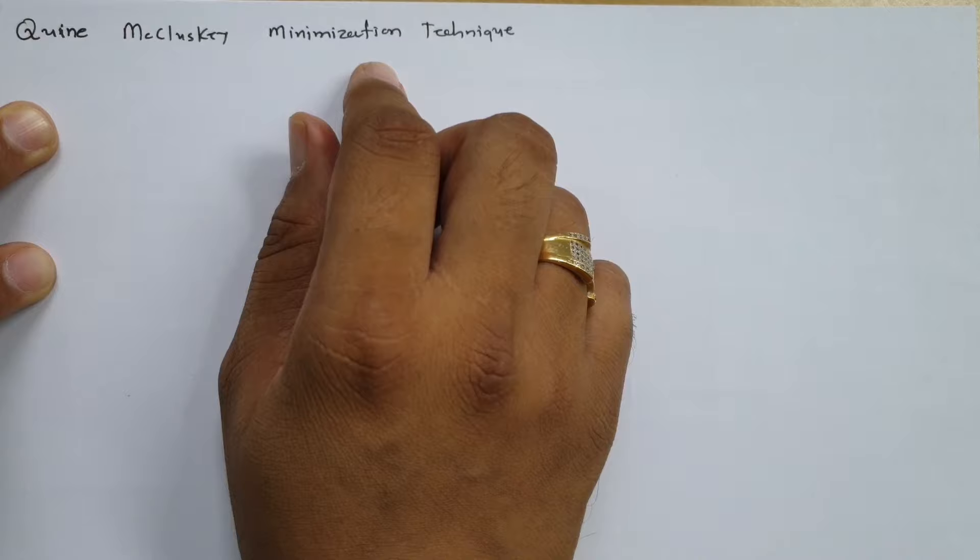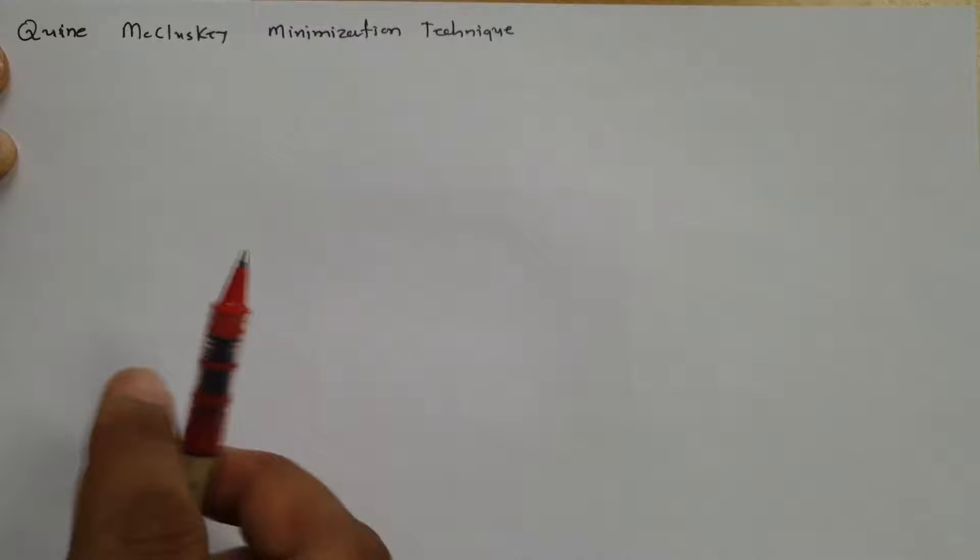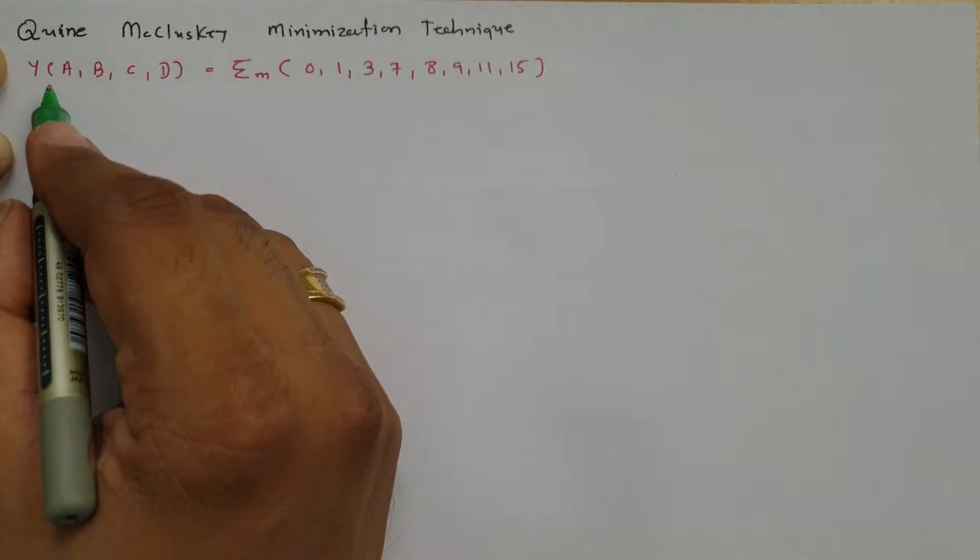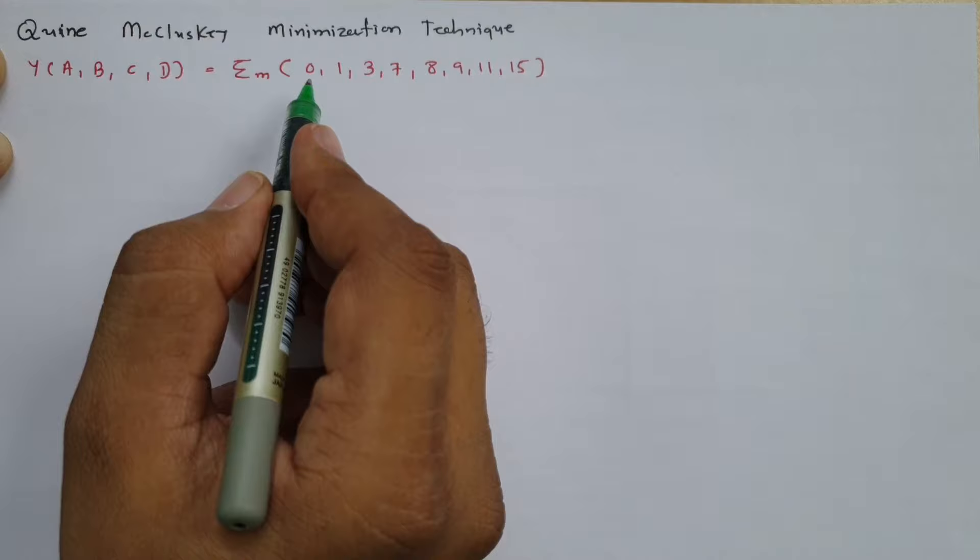So here, first I am giving you the question. The question is: y is equal to the summation of products of minterms 0, 1, 3, 7, 8, 9, 11, and 15.